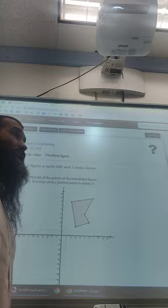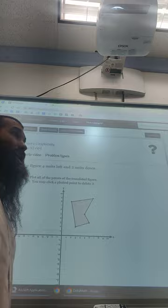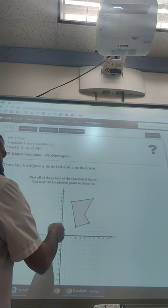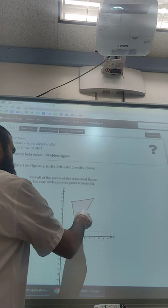Then we're translating graph, translating four left and two down. So each point, you're basically just going four left and two down. So let's say I start from the bottom here. I go four left and two down. And here I go four left and two down. Four left, two down. Four left, two down. I keep losing track.